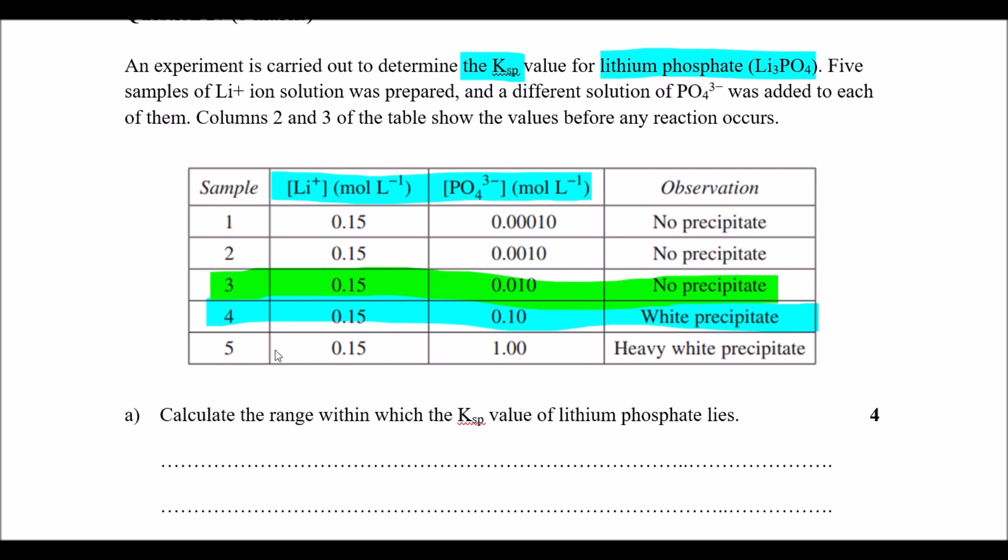Sample 5 here is sort of a red herring of our question. We actually want to know the range using the concentration prior to the reaction occurring and also just after it did. We're going to try and calculate the value of Q for the following two, and then we have some idea of where the range should be.